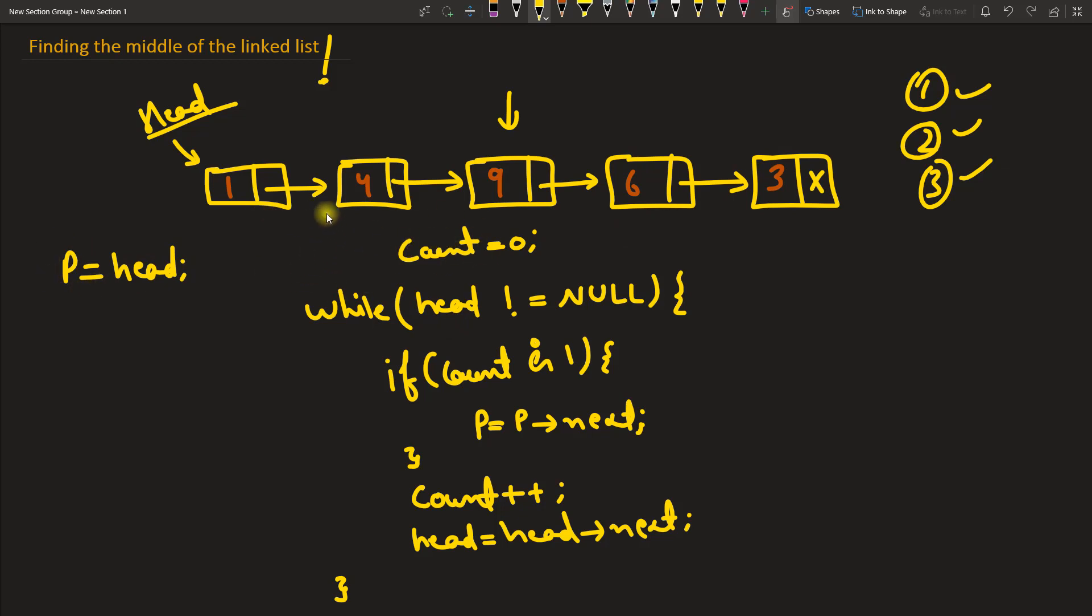The moment I am incrementing the head, if head is going from here to here, this count will also increase. So if it is like here, here, here, if head is here then at that time count is three because it starts from zero. So zero, one, two, three.